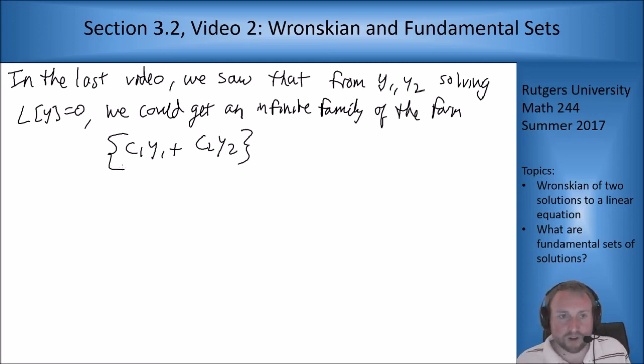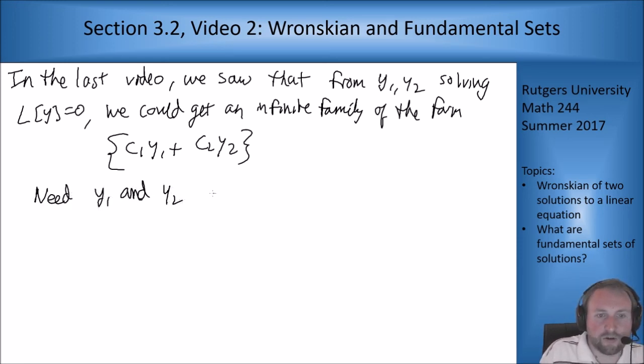One function should not give me enough to solve for any initial conditions because I have two different initial conditions I can vary independently. So I shouldn't be able to solve if I only have one function. So I need two functions and need to make sure those two functions are different enough in the proper way that I can meet every initial condition.